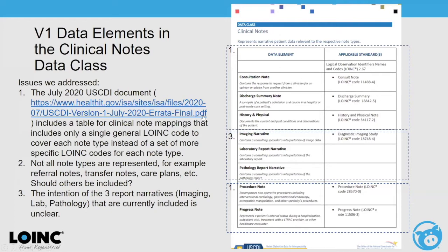Issue two is that not all note types are represented. We have consult, discharge summary, H&P, procedure, and progress notes — but there are other types like transfer notes and care plans. Where do outpatient notes fit? The third issue is that three narratives listed in the middle — which appear alphabetically — are not clearly defined as clinical notes. The description says something like 'contains a consulting specialist interpretation of the laboratory report,' but it's not really clear what that defines — whether it's a separate document or just part of the report.